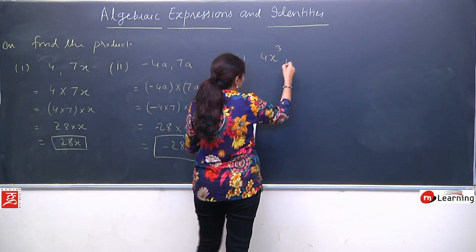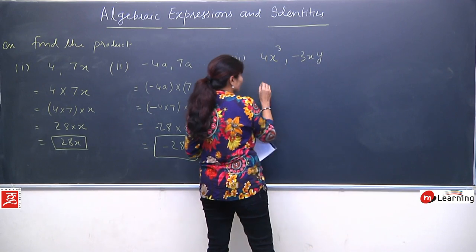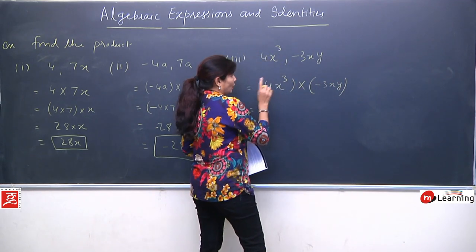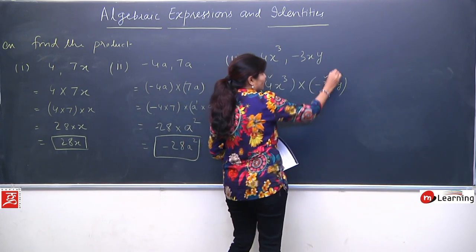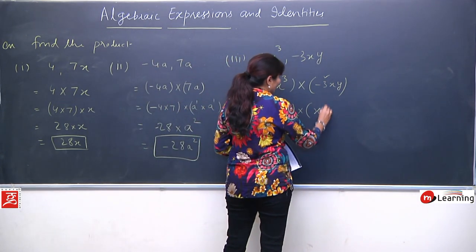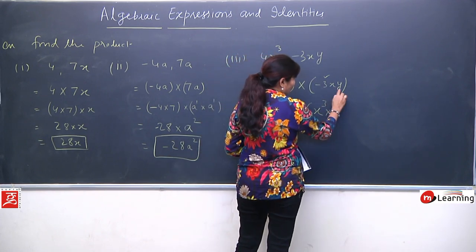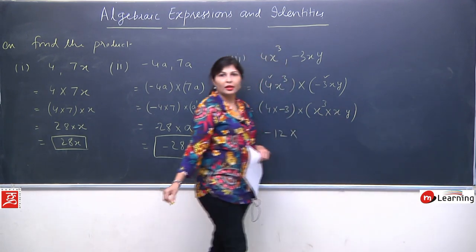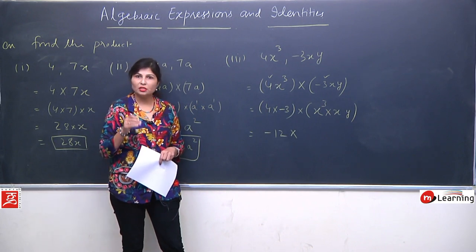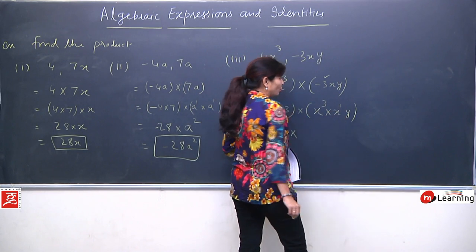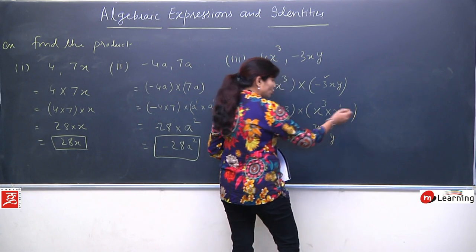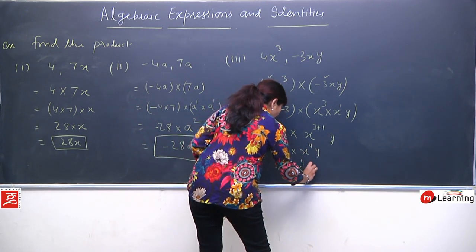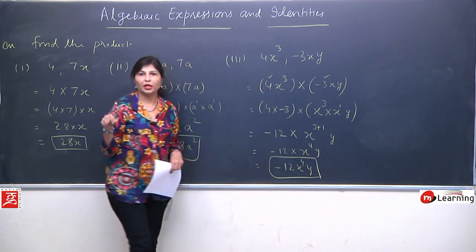Another example: 4x³ and minus 3xy. Write 4x³ multiplied by minus 3xy. Collect numbers: 4 and minus 3 give minus 12. Collect variables: x³, x, and y. For x: bases are same, so powers add — 3 plus 1 gives x⁴. y has no other matching variable, so y remains as is. Final answer: minus 12x⁴y.